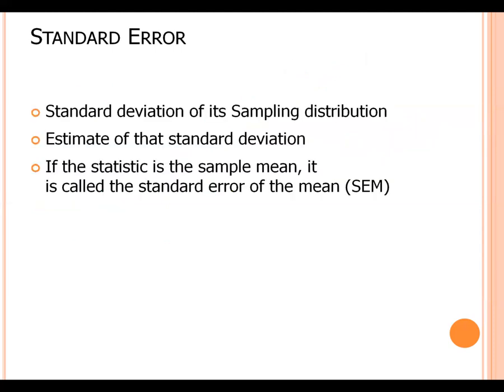Now, standard error. The standard error of a statistic is usually an estimate of a parameter. That means, standard error is the standard deviation of its sampling distribution or an estimate of that standard deviation. If the statistic is the sample mean value, it is called the standard error of the mean.